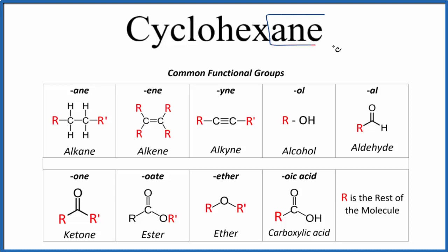First, it ends in A-N-E. When we see A-N-E, that tells us we're going to have an alkane, and it's going to be all carbons and hydrogens and only single bonds. So we have carbons, hydrogens, single bonds.